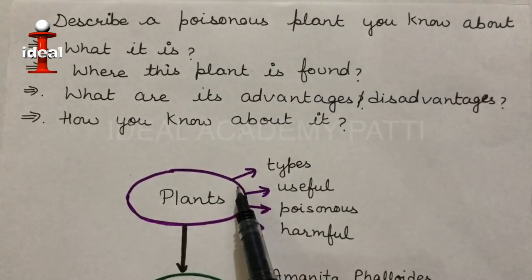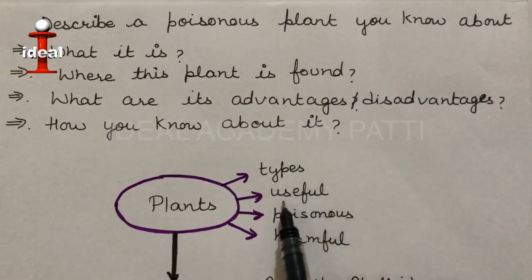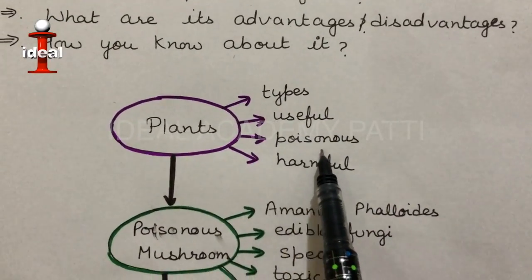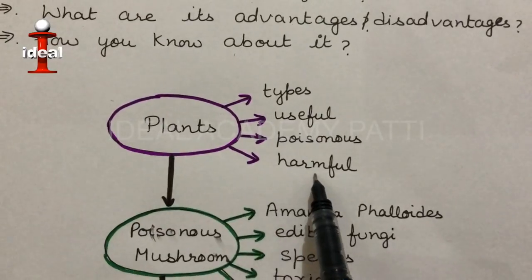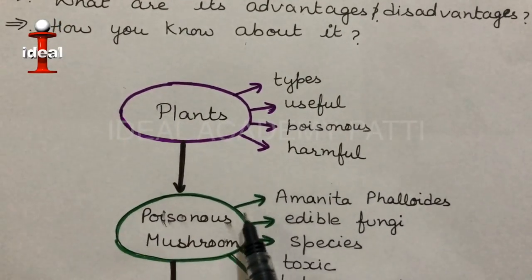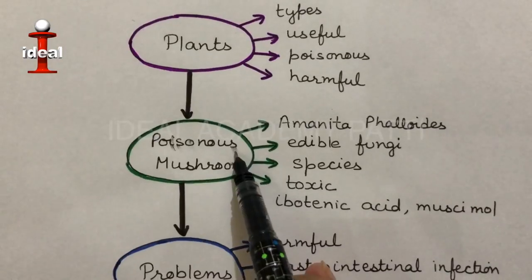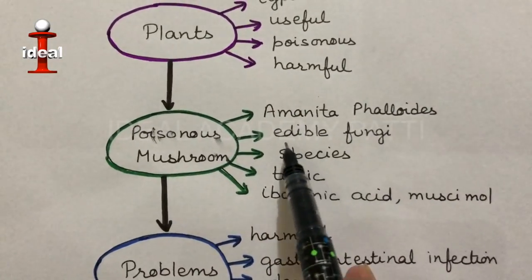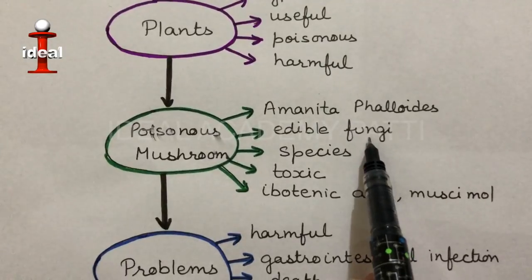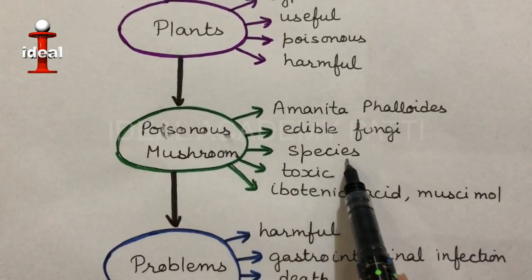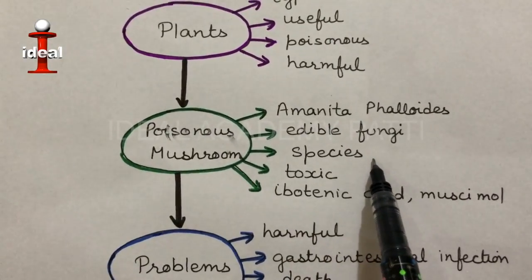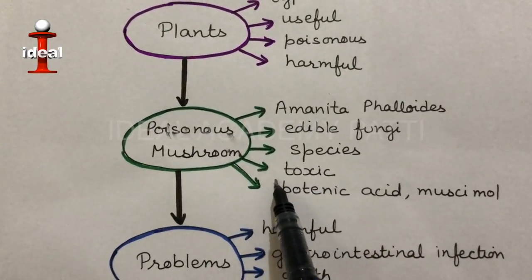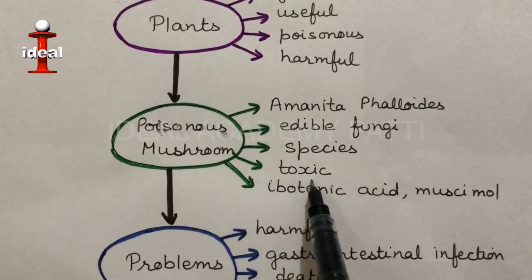In our surroundings there are many types of useful plants, but sometimes wild plants can be very poisonous and it could be harmful to touch or eat them. The poisonous plant I am going to talk about is the Amanita phalloides mushroom. Mushroom is an edible form of fungi and there are more than one hundred thousand species of mushrooms found all around the globe, but some species are highly poisonous, and Amanita phalloides is one of them.